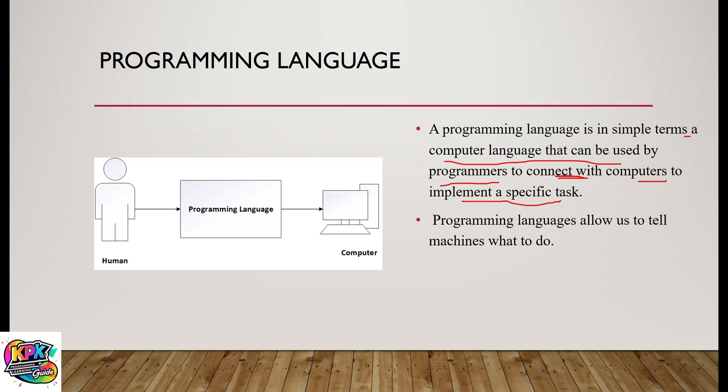In this diagram here, this diagram is depicting the relationship or what happens between a programmer, a programming language and a computer. Here is the programmer. The programmer, through the programming language, tells the computer what to do. The programming language is acting one way or the other as an intermediary between the human being and the computer.